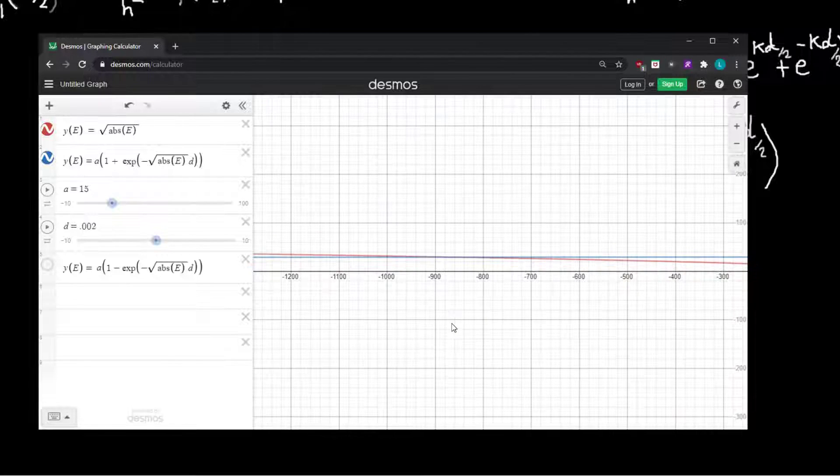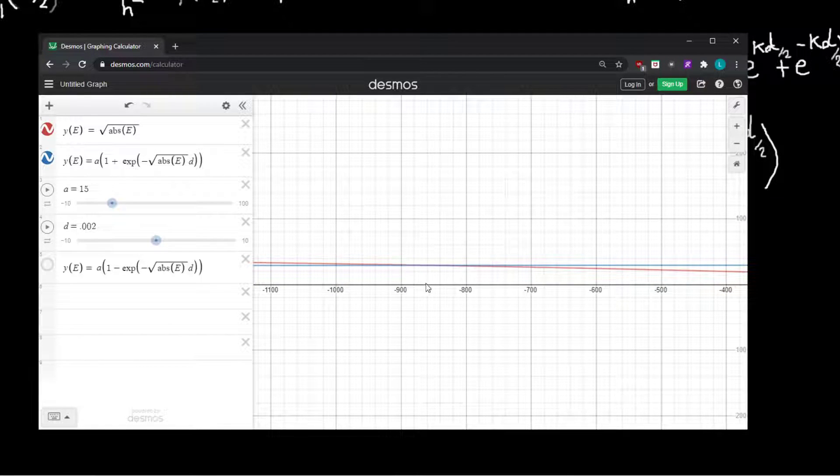So what that's telling us is that there is one eigenvalue. So there's one solution to this equation, and hence one bound state. So we have one even solution to our problem.